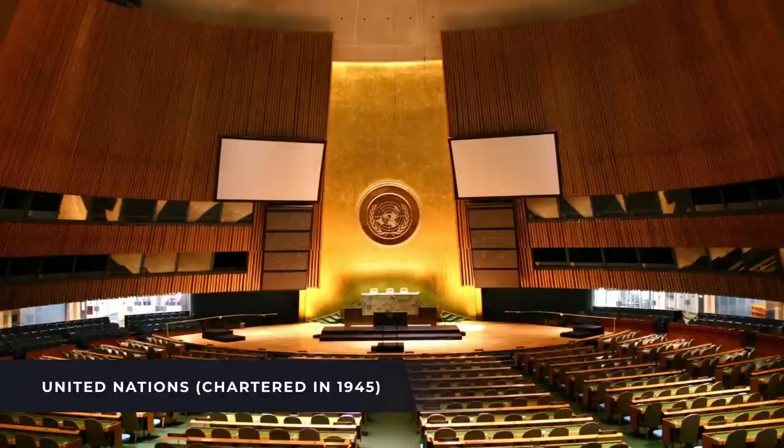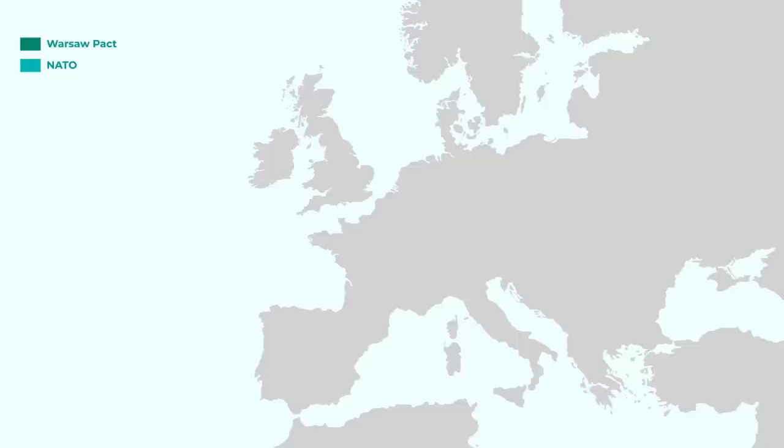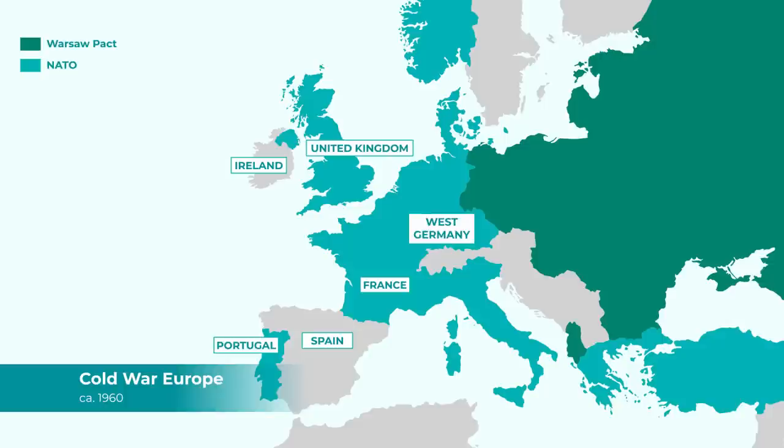The Marshall Plan wasn't just the United States coming in out of the kindness of American hearts. It had another motive: to discourage European nations, especially in Western Europe, from embracing communism. So we see here the beginning of the Cold War. The United Nations was created to provide a forum for all nations, yet Europe became divided between Eastern Europe and Western Europe.